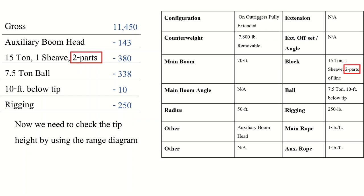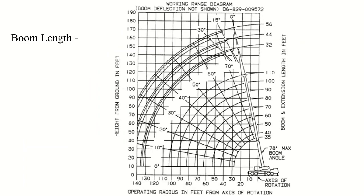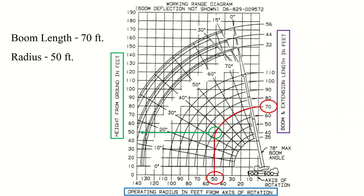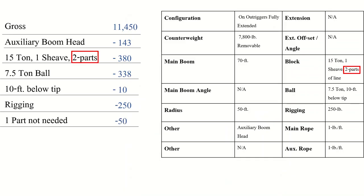To find the length of the unneeded part, we go to the range diagram and use the information from the chart to get the tip height. We're looking for height from ground in feet — that's our tip height. Using our boom length of 70 feet and radius of 50 feet, we follow the arc on the range diagram to where those values intersect, then read across to the height from ground. That lines up perfectly with 50 feet. Since the main rope weighs 1 pound per foot, our deduction for the one part not needed is 50 pounds.